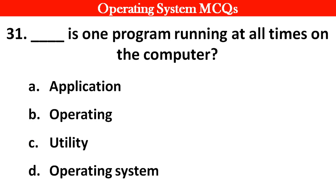Next question: Dash is one program running at all times on the computer. Options: A. Applications. B. Operating. C. Utility. D. Operating System. Right answer is option D: Operating System.